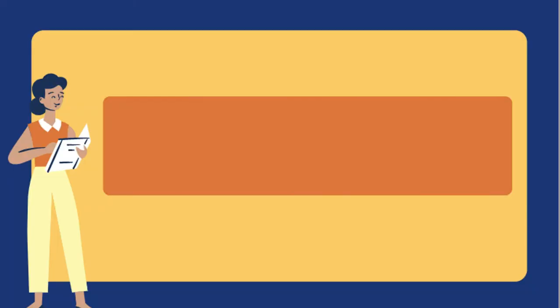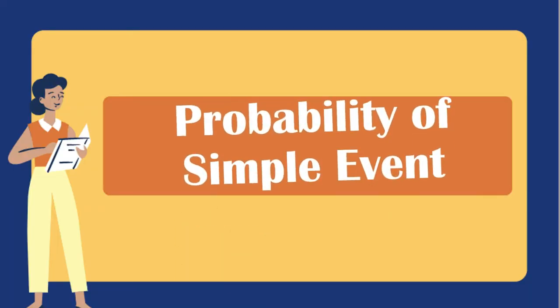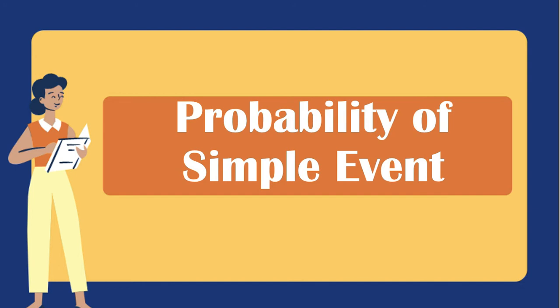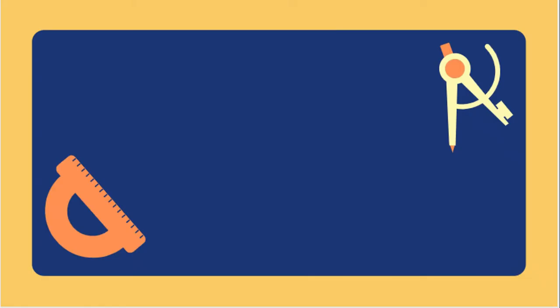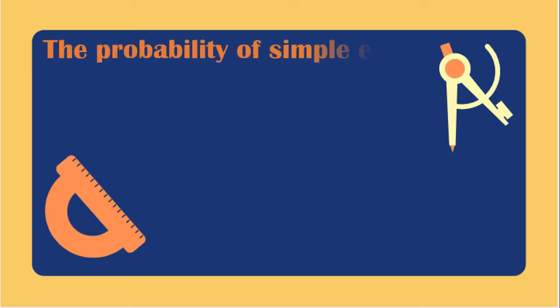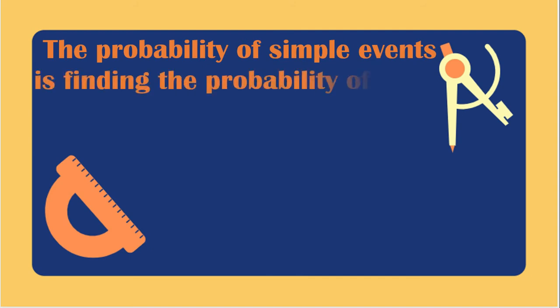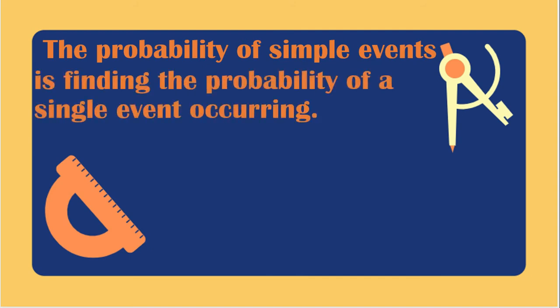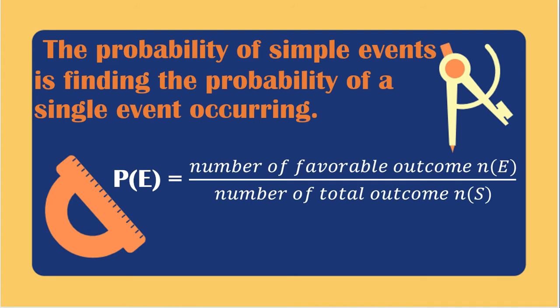This video lesson is all about probability of simple events and the problems involving it. Probability of simple events is finding the probability of a single event occurring. The formula is: probability of simple events equals the number of favorable outcomes, n(E), over the number of total outcomes, n(S).